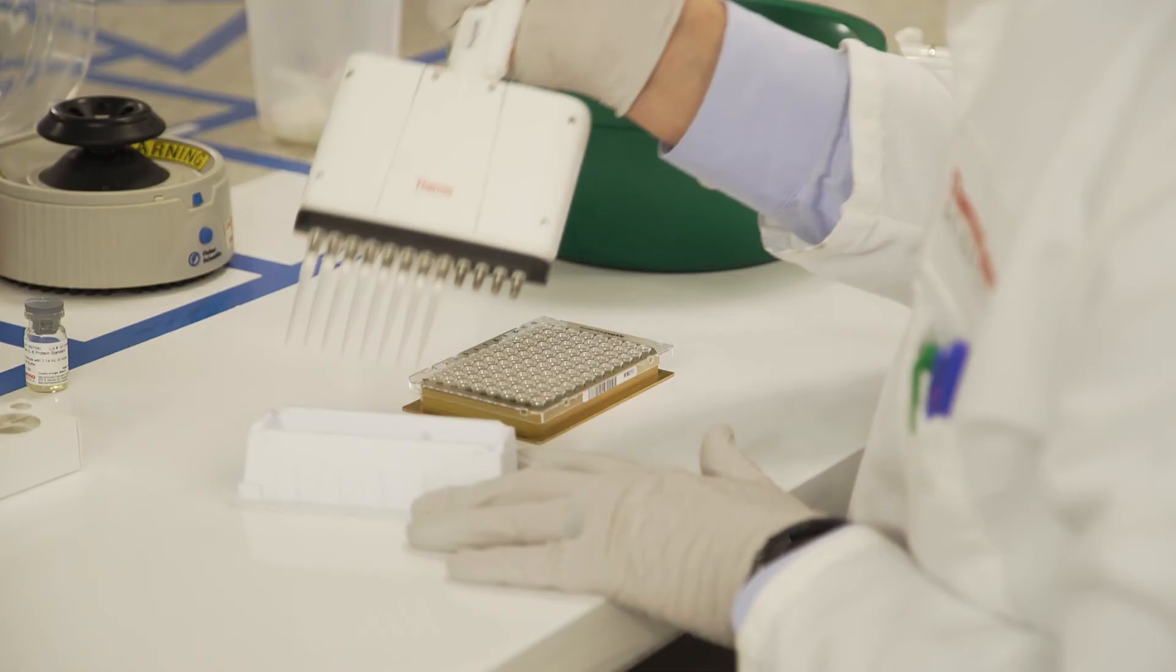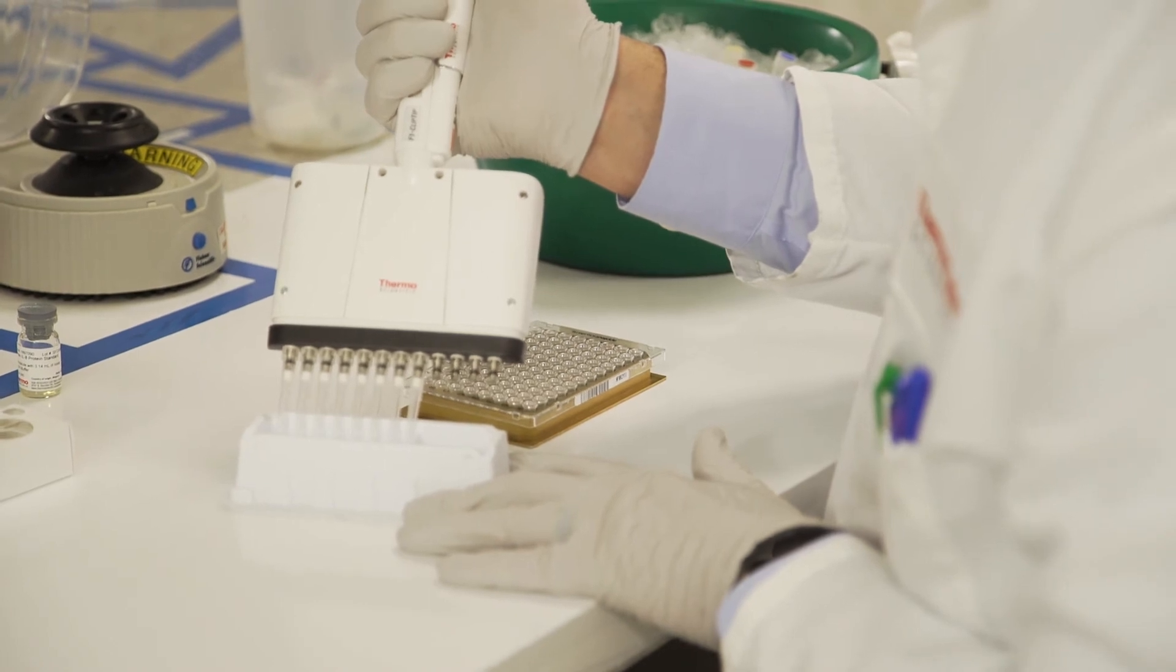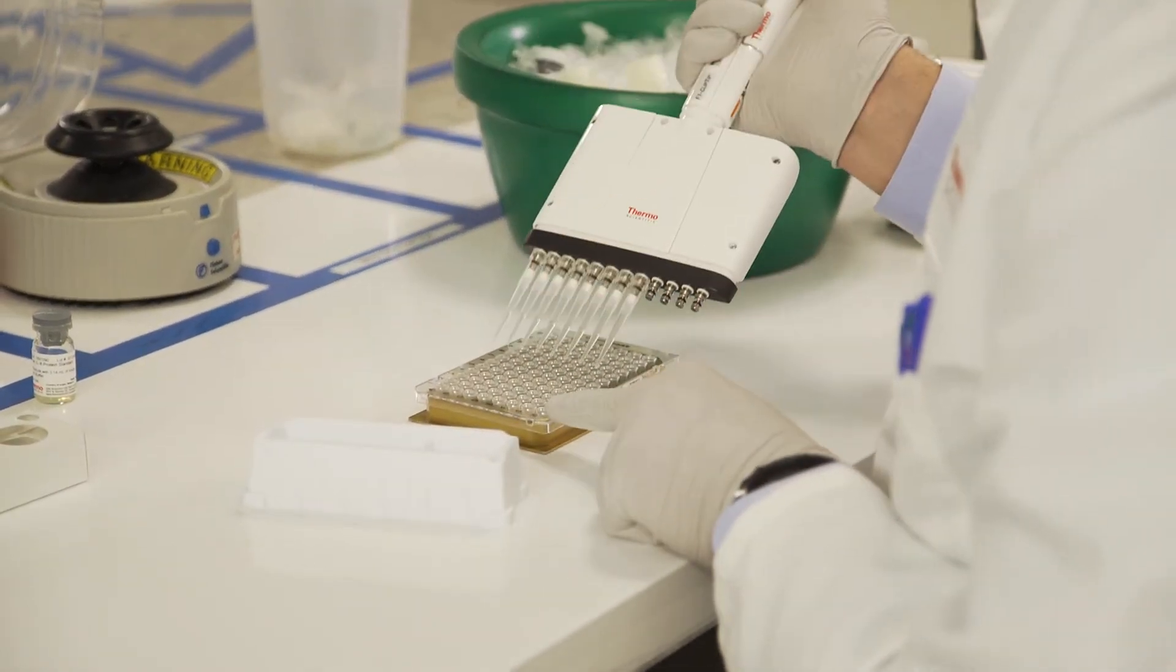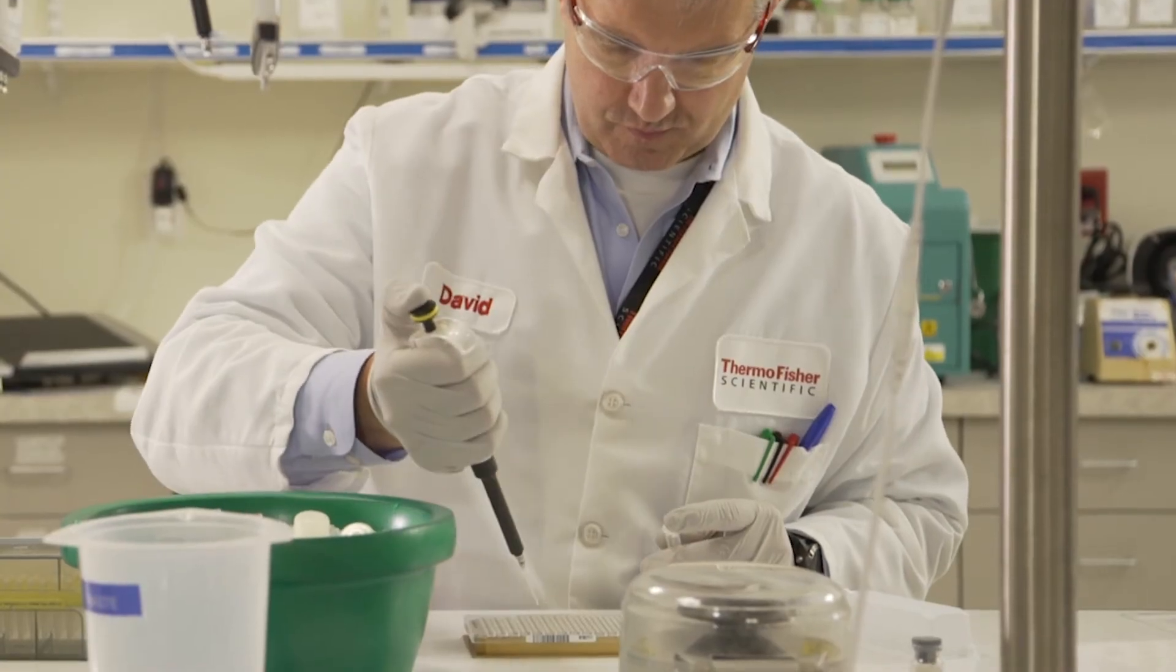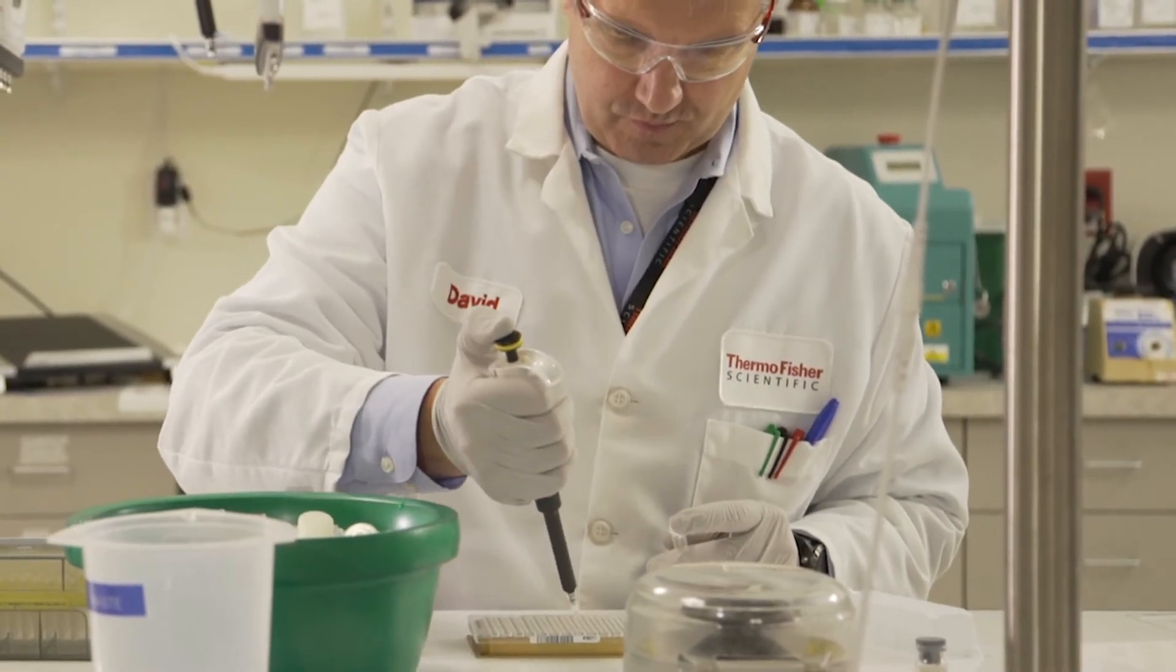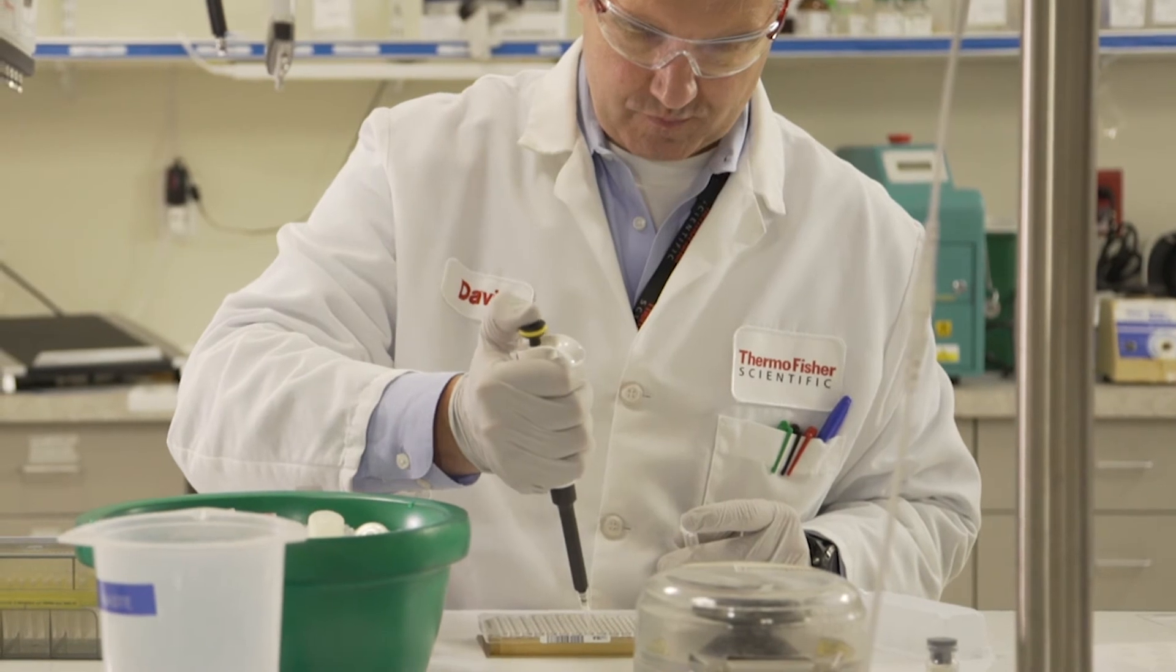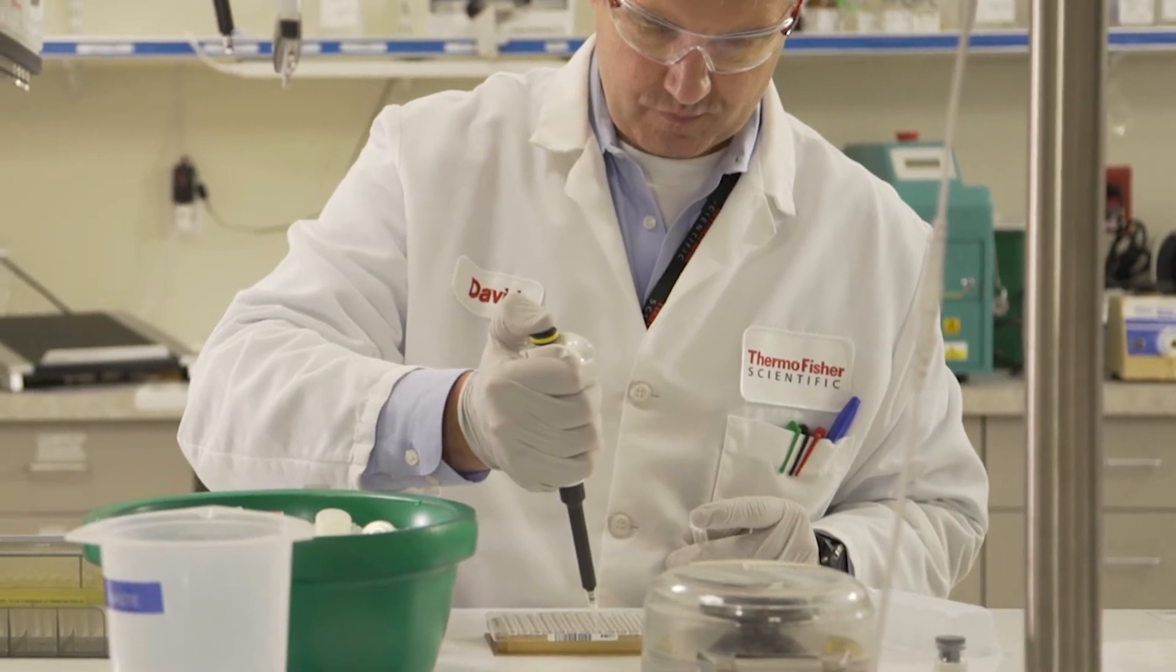Next, dilute your samples tenfold. Dispense 45 microliters of assay dilution buffer to the wells reserved for the unknowns. Then pipette five microliters of your sample, making sure to carefully mix by pipetting up and down before discarding your pipette tip.